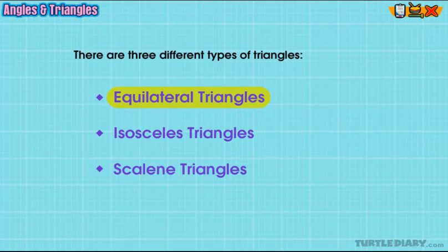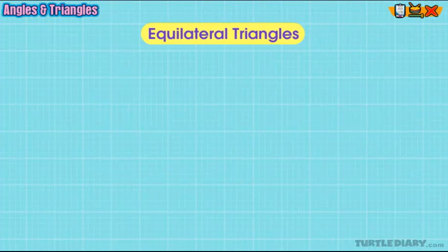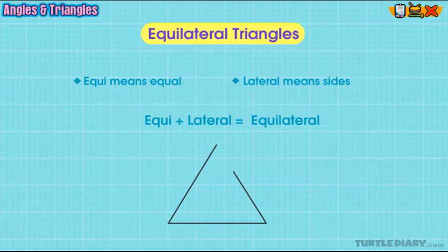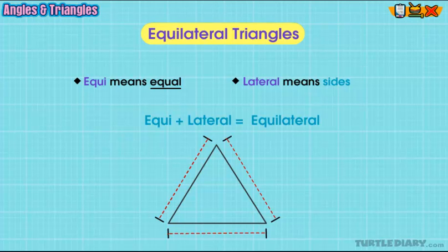Equilateral Triangles. The name of this triangle helps to remember its properties. Equi means equal, and lateral means sides. Equilateral triangles have three identical sides and identical angles. No matter what is the length of the sides, equilateral triangles always have three 60-degree angles.